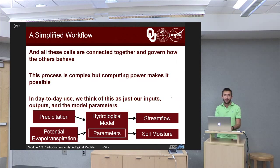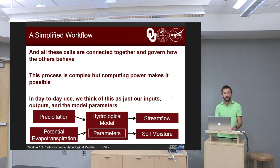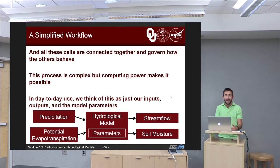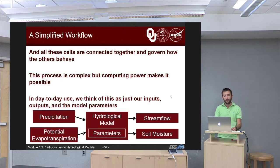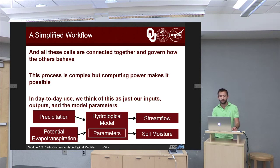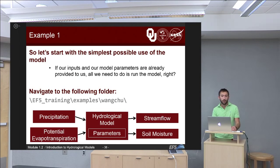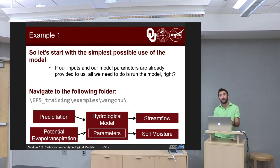All these cells are connected together and govern how the others around them behave. This process is very complex — it might take years with pencil and paper to model even a very small river basin. But computing power allows us to parallelize this, doing thousands of cells at the same time. In day-to-day use, we can reduce this all down to a single block diagram: inputs, outputs, and model parameters. We start with precipitation and PET, feed those into a hydrological model with parameters we've set, and as a result the model gives us stream flow and soil moisture. For example one, we'll provide the inputs and model parameters ready to go — all you need to do is run the model.